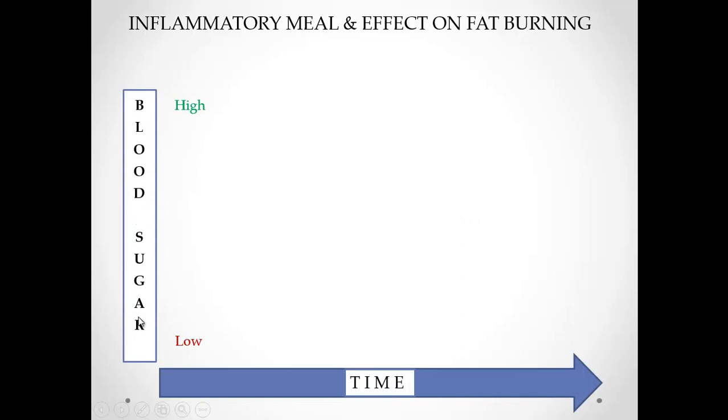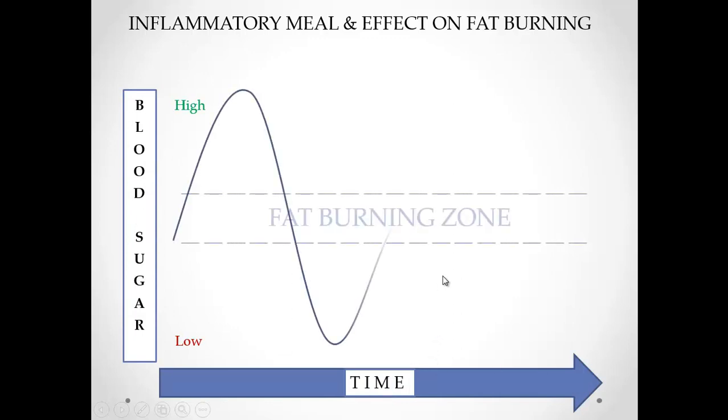When you eat your meal, typically what we see is this, blood sugar on the y axis, thyme on the right. If we're eating inflammatory foods, if we're eating refined sugar, if we're just skipping breakfast or skipping meals or going too long between meals,